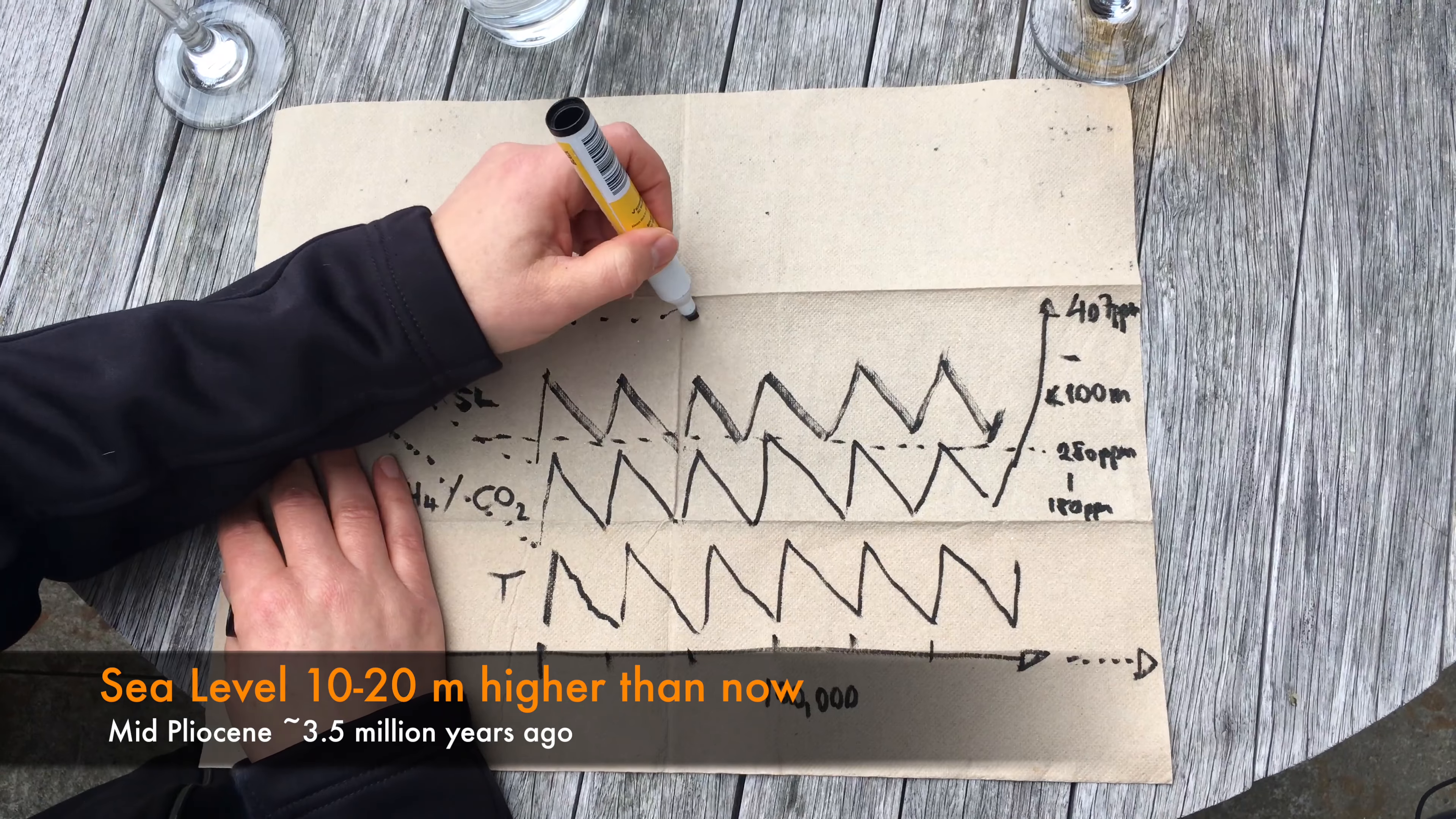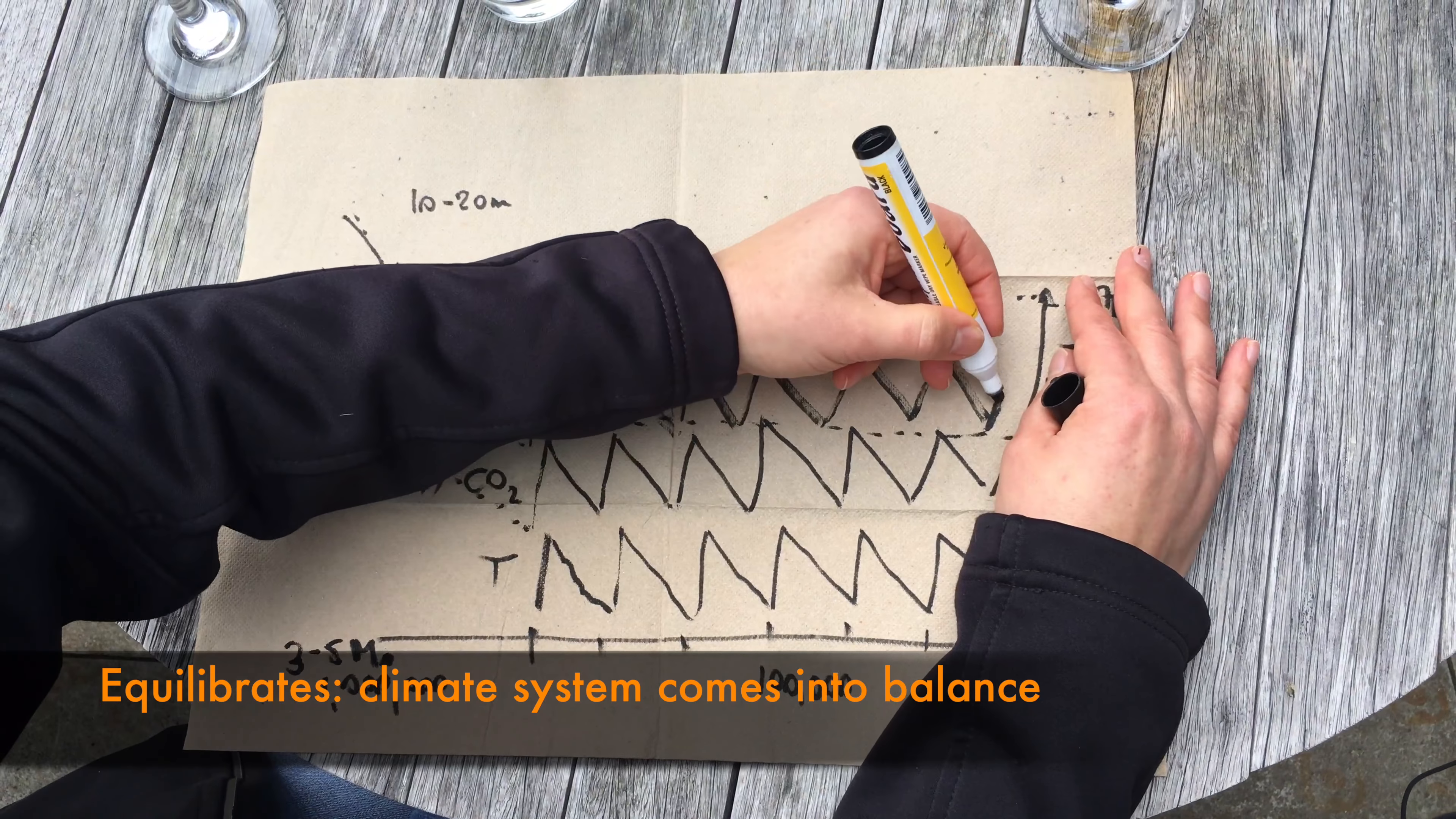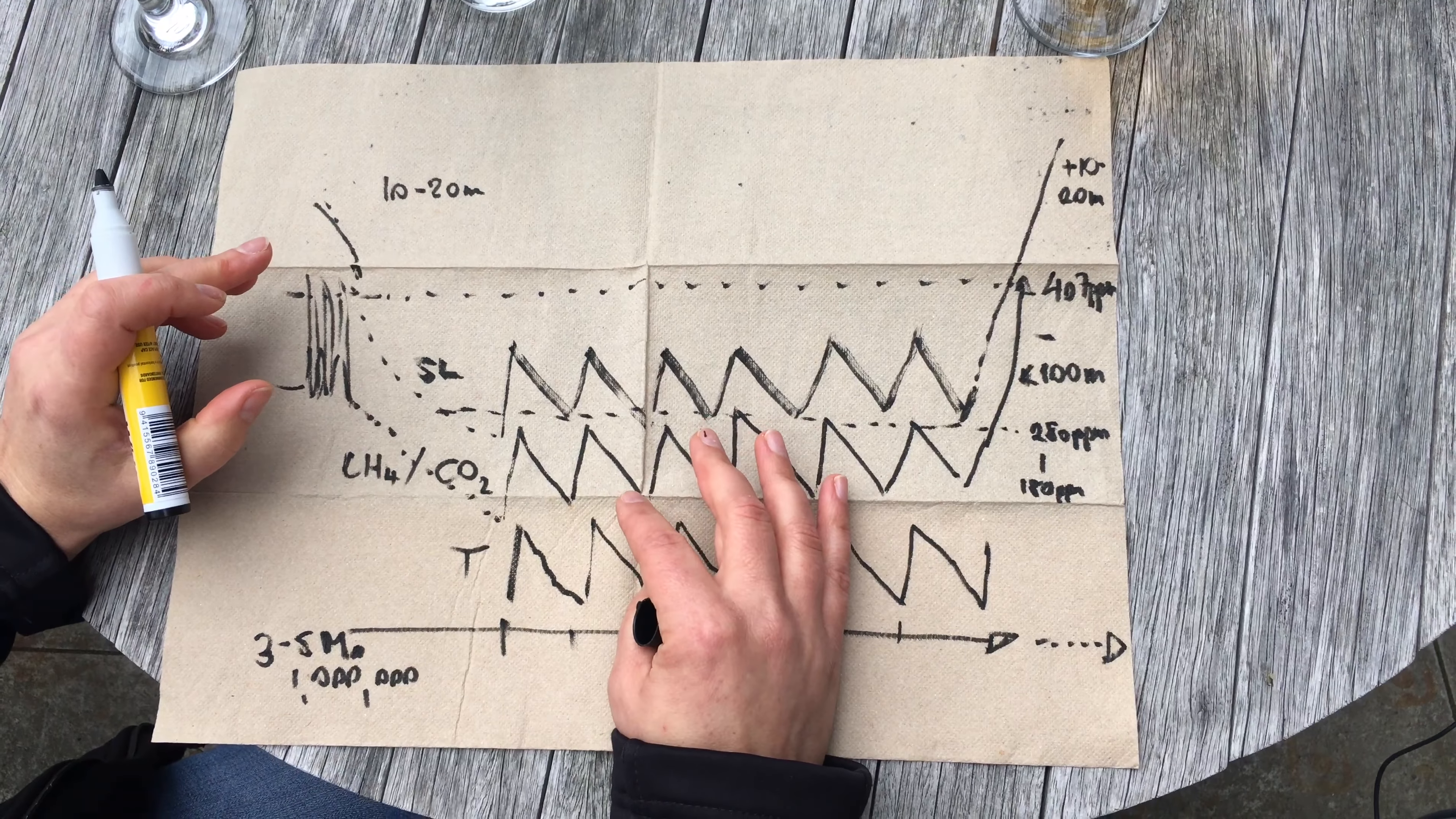We can now draw from this time period forward into the future. We had 400 ppm, now we know when the climate system equilibrates with the 400 ppm that we should expect once again today's sea level to also increase to plus 10 to 20 meters.